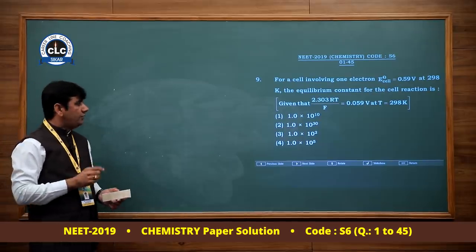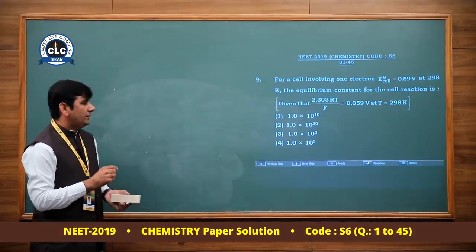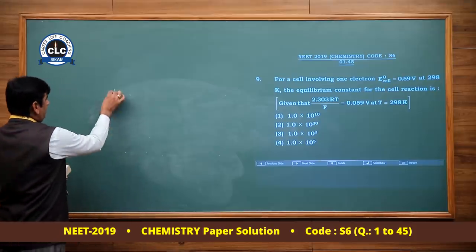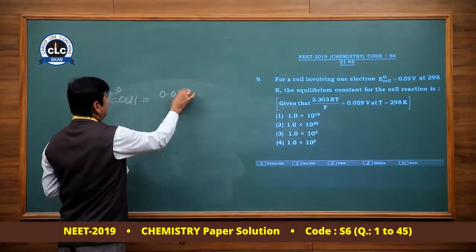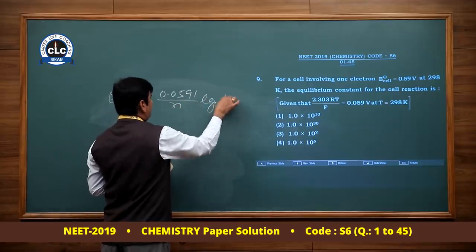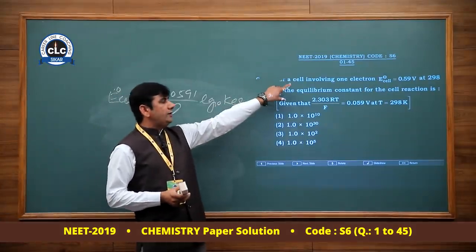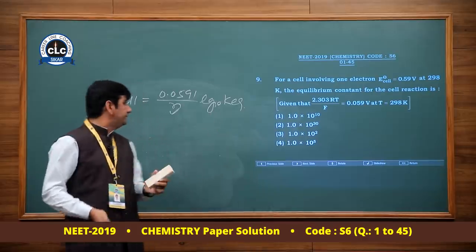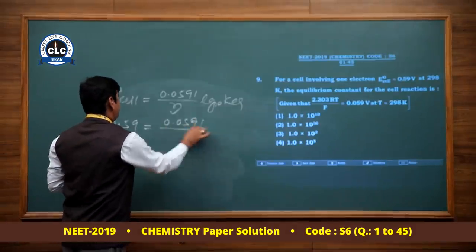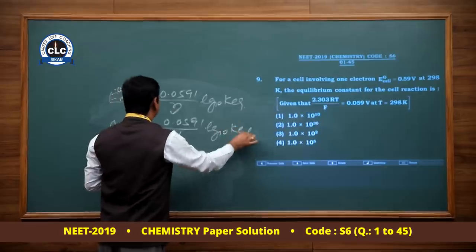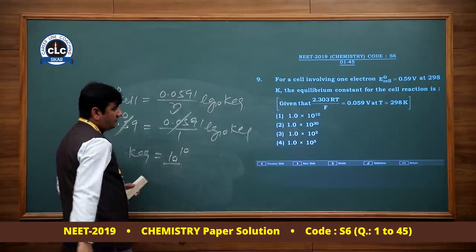Question number 9: For a cell involving one electron, E°_cell = 0.59 V at 298 K. The equilibrium constant: E°_cell = (0.0591/n) × log K_eq. Given n = 1 and E°_cell = 0.59 V, log K_eq = 10, so K_eq = antilog(10) = 10^10. Option 1 is correct.